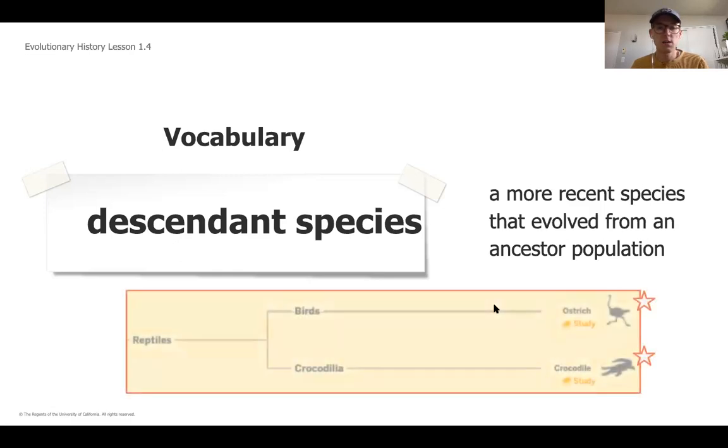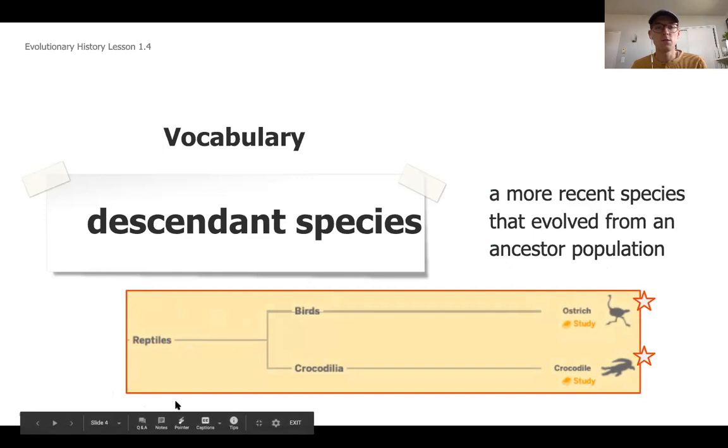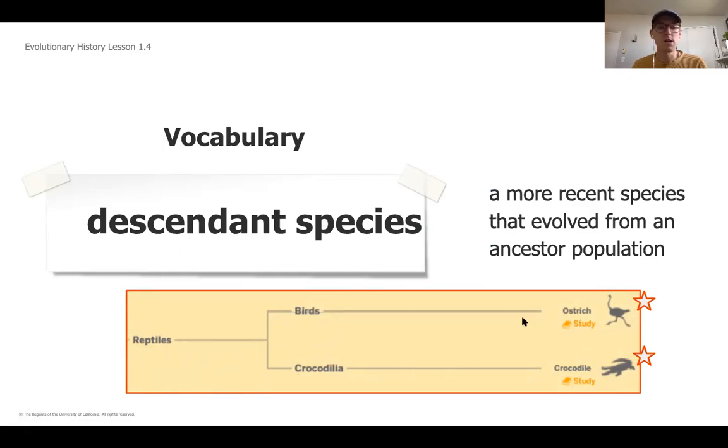So we're going to take a look here at, if you've ever seen a family tree, we're going to look closer at what we call the tree of life, which shows all different animals, how they are all related. This is just a piece of it. You can see here that the ostrich and the crocodile would be considered descendant species because they broke off on this chain right here from reptiles and evolved from reptiles being their ancestor population.